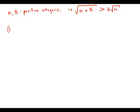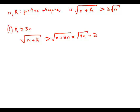Statement number 1 tells us that k is greater than 3n. So what this would mean is that n plus k would have to be greater than square root of n plus 3n. Well, square root of n plus 3n, that's the square root of 4n. The square root of 4n is 2 times the square root of n.